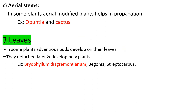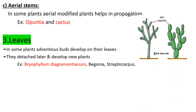The third category of stems is aerial stems — these are strong stems able to grow upright. In some plants, aerial modified stems help in propagation. We can see this type of propagation in cactus and opuntia. These plants have many different stem segments, and when stem segments fall on the soil, they begin to develop into new cactus or opuntia plants.